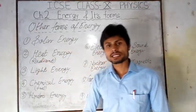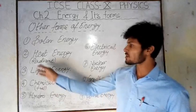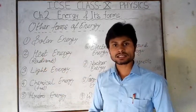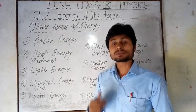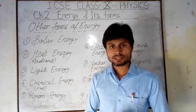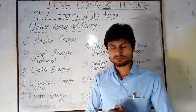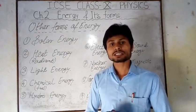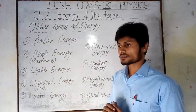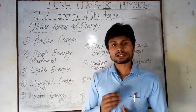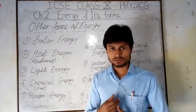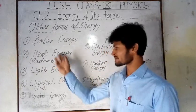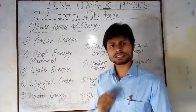The second form is heat energy, also called radiant energy. This energy is generated when something burns. For example, the burning of wood or the burning of charcoal produces heat energy.